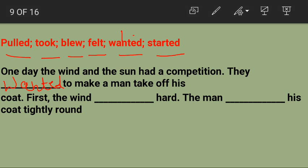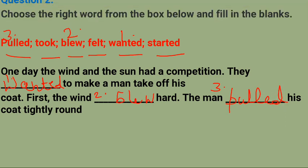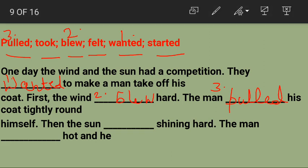First the wind blew hard — pahle wind ne kya kiya? Woh teji se chali thi, toh kya hoga — blue (blew) hard. The man pulled his coat tightly around him — man ne apne coat ko apne charo taraf tightly khiinch liya, so 'pulled.' Then the sun started shining hard — tab sun ne teji se chamakna shuru kiya, so 'started.'